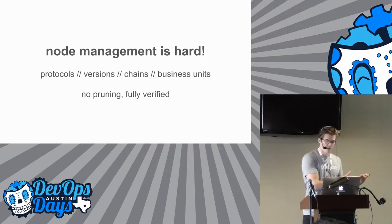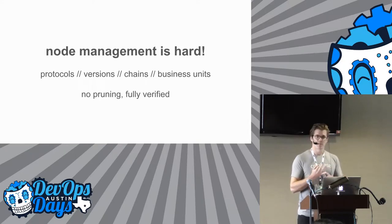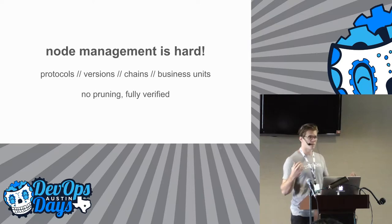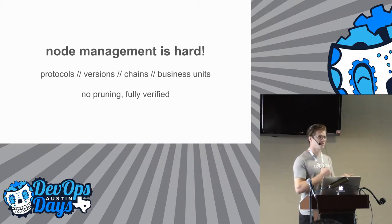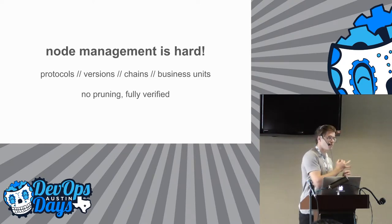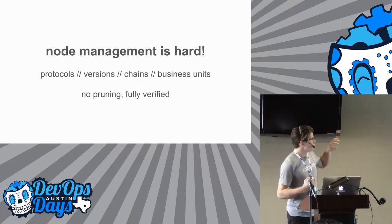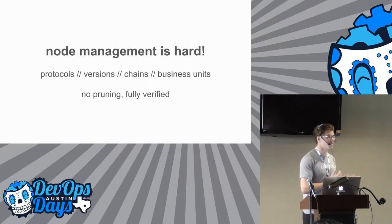Another thing that made this tricky is that node management overall gets really, really complicated for us. There are tons of different protocols we're trying to support — currently Ethereum, Bitcoin, Bitcoin Cash, and Litecoin, but hopefully more to come. Each one has different versions, multiple chains — multiple test net versions per protocol, different levels of stability. And we also have many different business units at this point: coinbase.com brokerage and a series of other businesses that all need to talk to the blockchain. When you multiply all these things together, there are quite a lot of nodes to manage, and keeping them all under 30 days old is a pretty challenging problem.